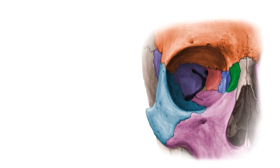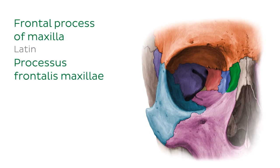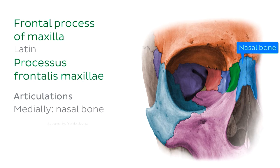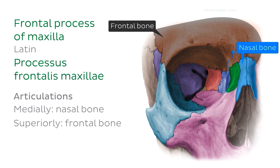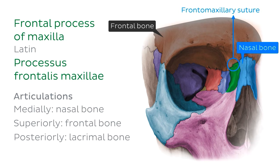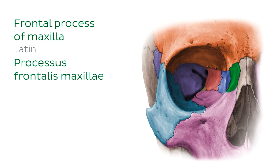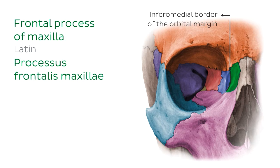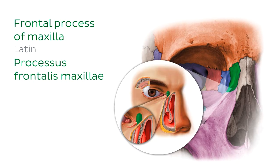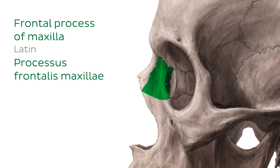The superior part of the maxilla presents two processes. The first is the frontal process, a prominent bony projection stretching superiorly and posteriorly from the maxilla by the side of the nose. It forms the lateral boundary of the bridge of the nose, where its medial border articulates with the nasal bone. Its superior border articulates with the frontal bone, and this articulation is known as the frontomaxillary suture. Posteriorly, the frontal process of the maxilla articulates with the lacrimal bone. The lateral border of the frontal process forms the inferomedial border of the orbital margin. The anterolateral aspect of the frontal process is marked by a well-defined ridge known as the anterior lacrimal crest, which forms the lateral border of the lacrimal fossa, which holds the lacrimal sac. On the lateral aspect, you'll see a small indentation called the lacrimal notch, where the lacrimal bone fits into the frontal process.